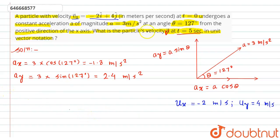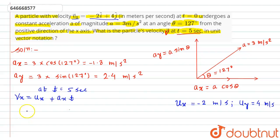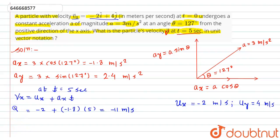The x-component of velocity at t = 5 seconds is calculated as vₓ = uₓ + aₓ·t. Substituting the values: uₓ = -2, aₓ = -1.8, t = 5. This gives vₓ = -2 + (-1.8)(5) = -11 meters per second.